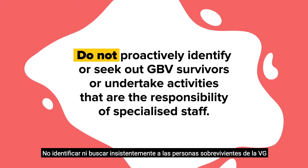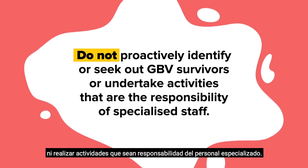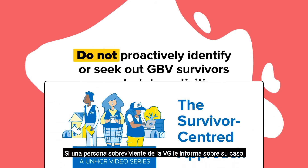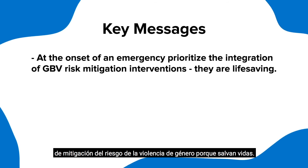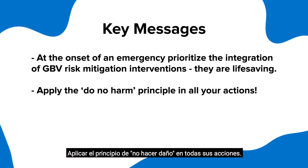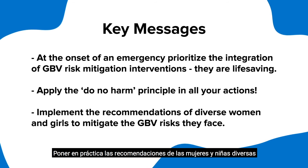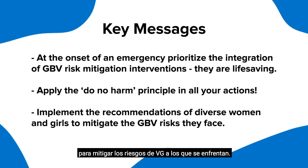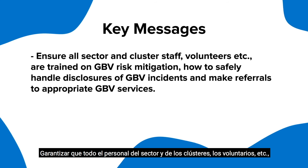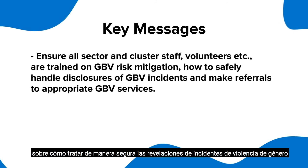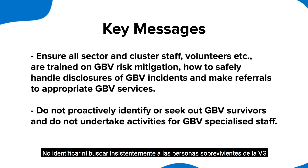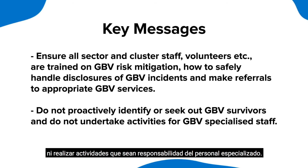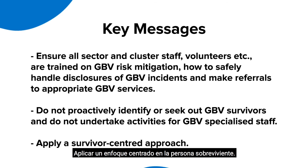Do not proactively identify or seek out GBV survivors, or undertake activities that are the responsibility of specialized staff. If a survivor of GBV discloses to you, respond using the survivor-centered approach. Key messages at the onset of an emergency: prioritize the integration of GBV risk mitigation interventions — they are life-saving; apply the do-no-harm principle in all your actions; implement the recommendations of diverse women and girls to mitigate the GBV risks they face; ensure all sector and cluster staff, volunteers, etc. are trained on GBV risk mitigation, how to safely handle disclosures of GBV incidents, and how to make referrals to appropriate GBV services; do not proactively identify or seek out GBV survivors, and do not undertake activities meant for GBV specialized staff; apply a survivor-centered approach.